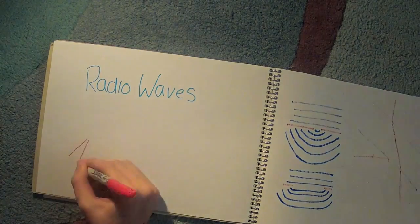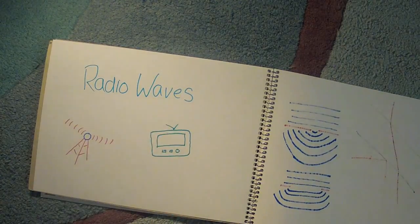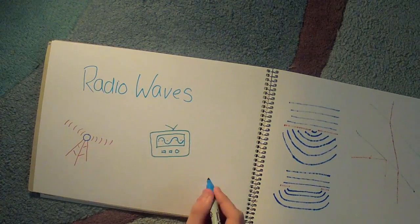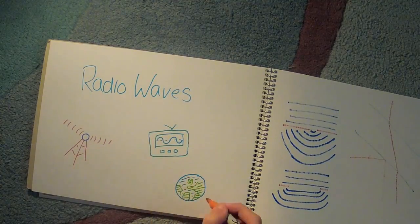Radio waves are most commonly used for broadcasting radio and TV, radio astronomy, and MRI scans. They have a very large wavelength between one million kilometers and ten centimeters, the largest of all electromagnetic waves.